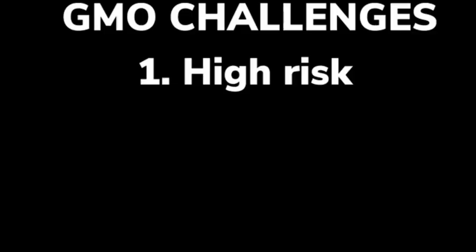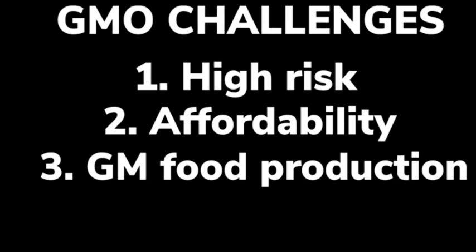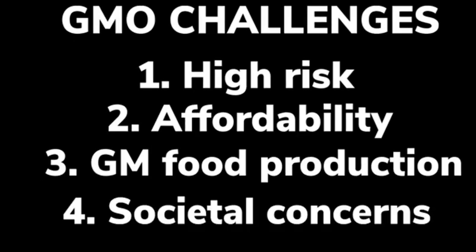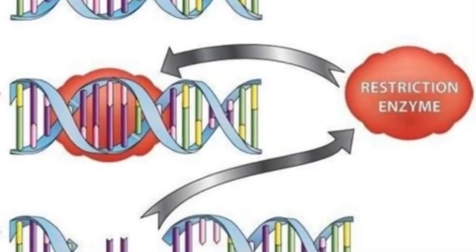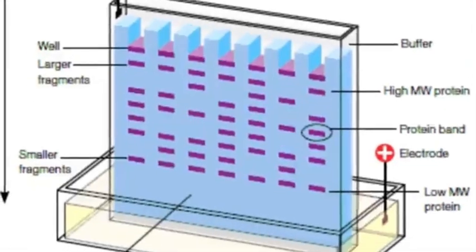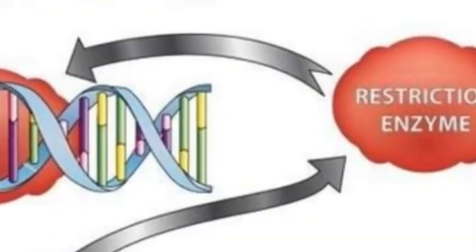Number one, there are high levels of risk. Number two, many people can't afford it. Number three, genetically modified food adoption. And number four, societal concerns such as environmental harm, bioterrorism, and ethical issues. The basic tools for genetic manipulation include restriction enzymes, gel electrophoresis, denaturation, and hybridization.